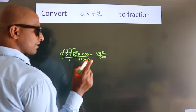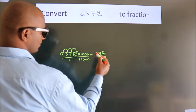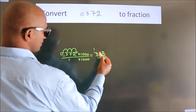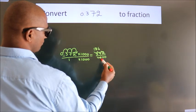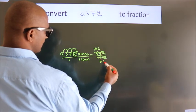Now I cancel with 2. 2 into 372 gives 186, 2 into 1000 gives 500.